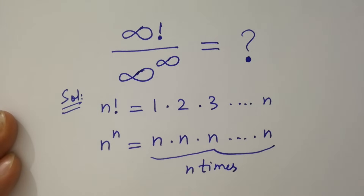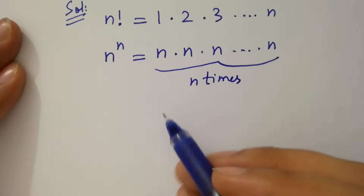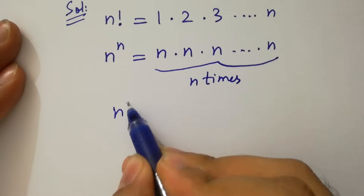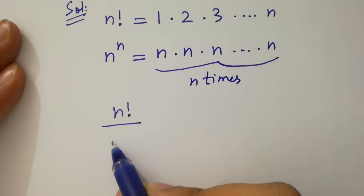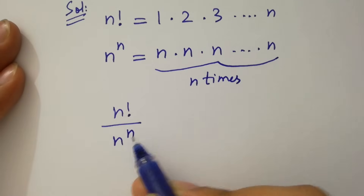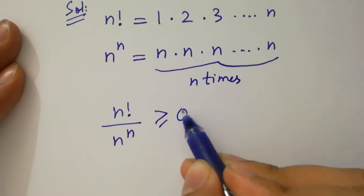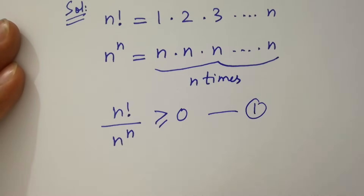Then for any positive n, we have n factorial over n to the power n will be greater than or equal to 0. Let's call this the first equation.